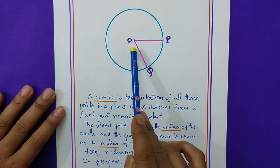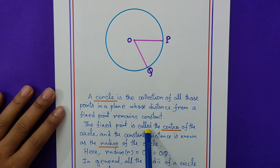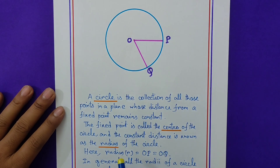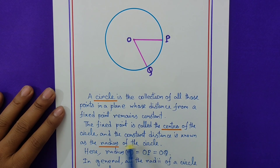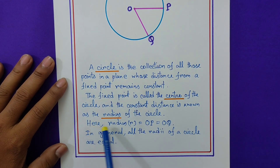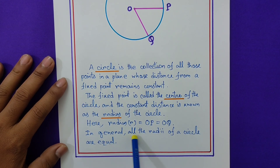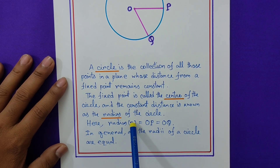This is the fixed point, and OP distance and OQ distance are both the same. A fixed point is called the center of the circle — here O is the center. The constant distance is known as the radius of the circle, so OP and OQ are both radii. Radius R equals OP equals OQ, meaning both distances are the same. In general, all the radii of the circle are equal. Radii is the plural form of radius.